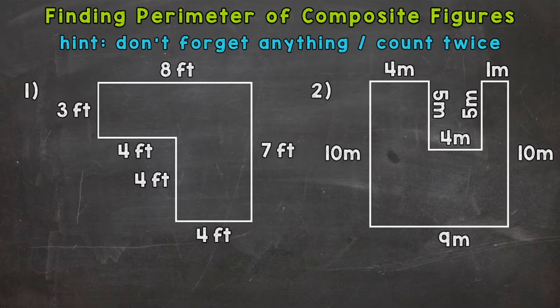Let's jump into number one, where we have a figure with a bunch of different sides. When it comes to composite figures, it's more complex than just finding the perimeter of a simpler figure like a rectangle or triangle, where we just have four or three sides.